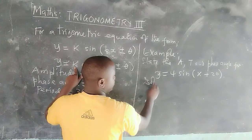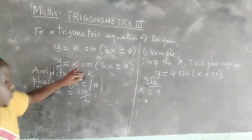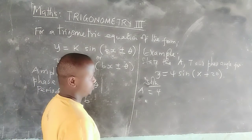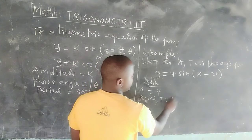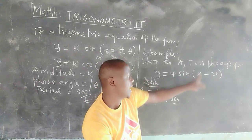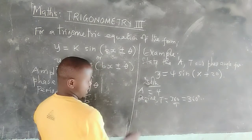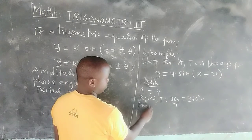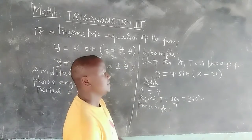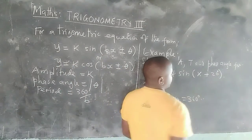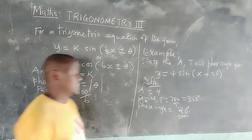Solution. Amplitude equals 4, because it is the value of k in the expression. The period T will be 360 divided by the value before x, which is 1 in this case. Therefore, the period will be 360 degrees. And finally, the phase angle will be the angle here, which is 20 degrees.